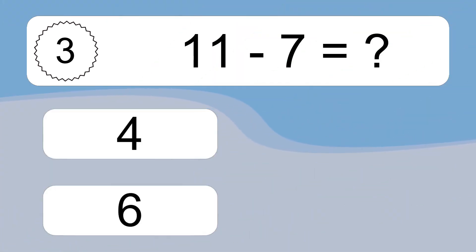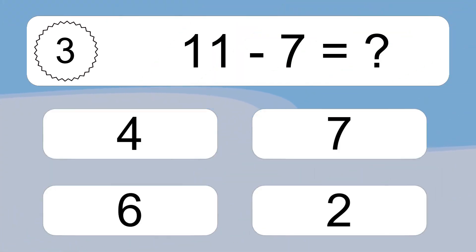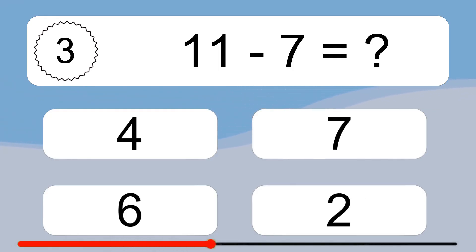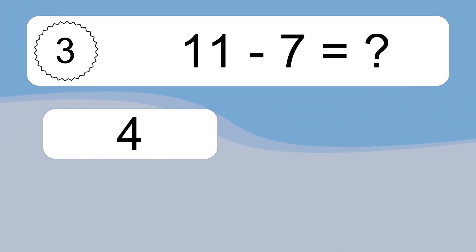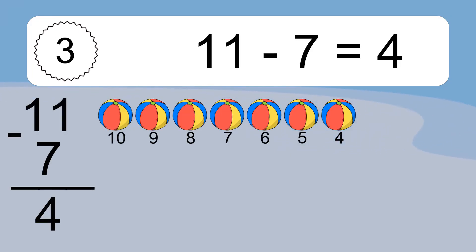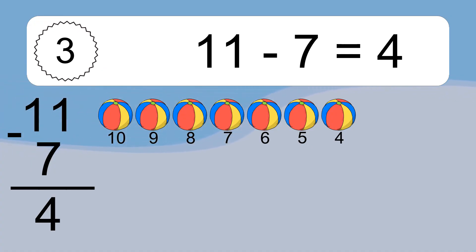11 minus 7 equals what? 11 minus 7 equals 4. Let's count it. 10, 9, 8, 7, 6, 5, 4.